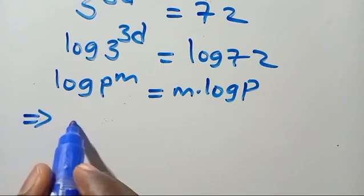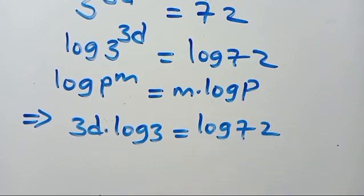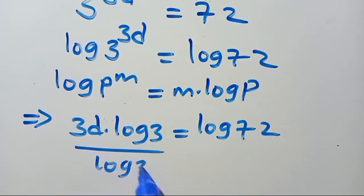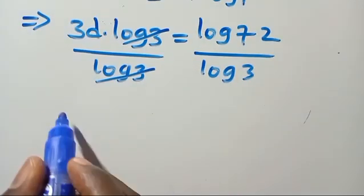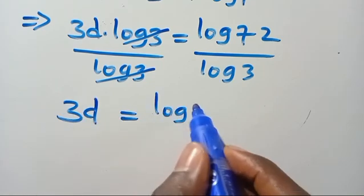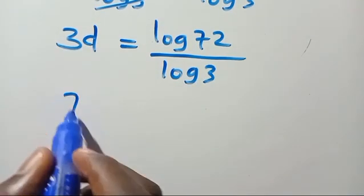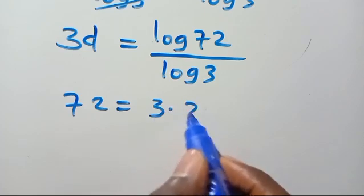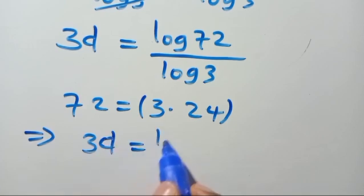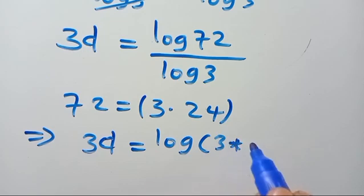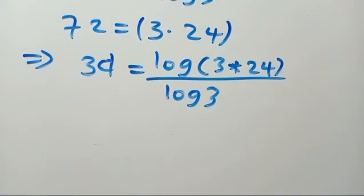So this implies we are going to have 3D multiplied by log 3 equals log 72, which gives 3D equals log 72 divided by log 3. We can write 72 as the product of 3 times 24, so substituting here we have 3D equals log of 3 times 24 divided by log 3.